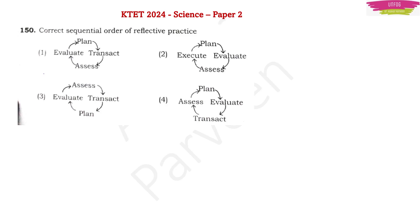Another question was a question of debate — the correct sequential order of reflective practice. In my previous answer key video I had given option 2, but now we have come to the conclusion that option 1 is the correct answer, because the meaning of 'transact' is executing, not evaluating. The sequence should be: plan, execute, assess, and then evaluate. Option 1 should be the correct answer as of now. But I want to tell you that maybe one or two differences may remain between our solutions and the official government answer key, since some questions can have different answers from different perspectives. Let us wait for the final answer key.